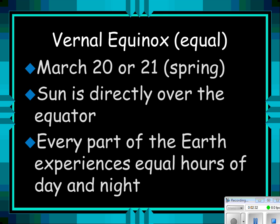The vernal equinox — vernal actually means spring — and equinox, think about the word equal, happens around March 20th or 21st. The Sun is directly over the equator and every part of the Earth experiences equal hours of day and night. Remember: equinox, equal, and equator — the Sun is over the equator at the equinoxes, giving all areas equal amounts of day and night.